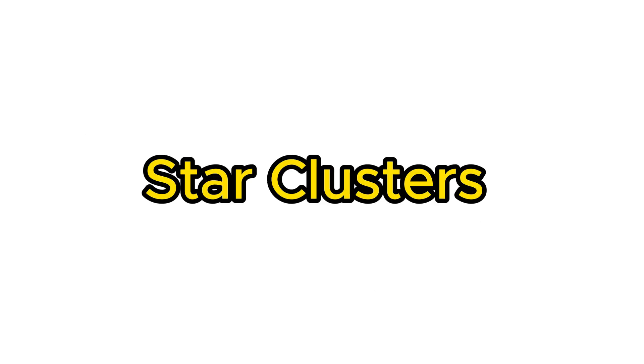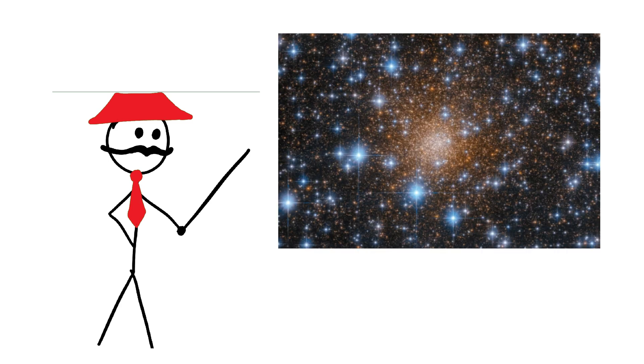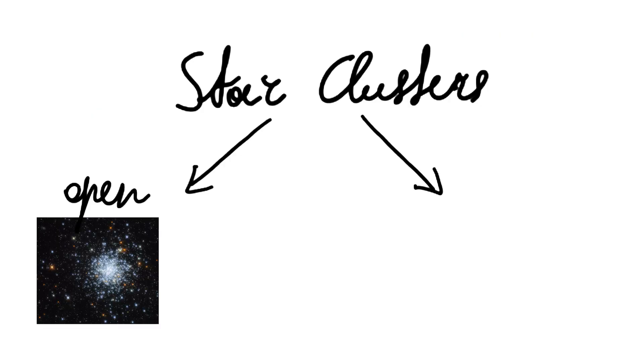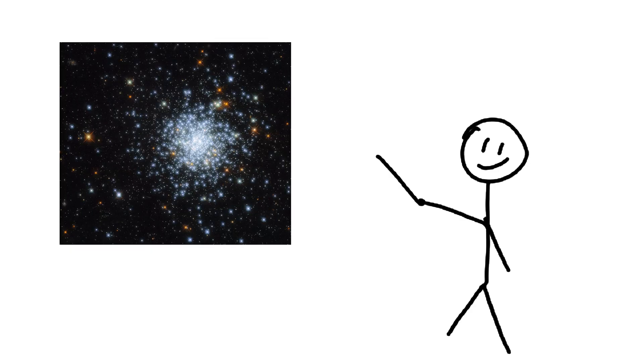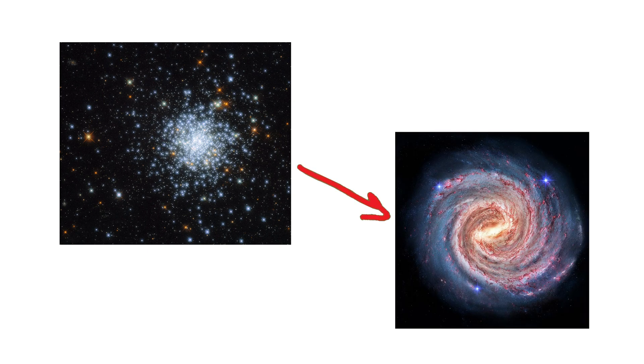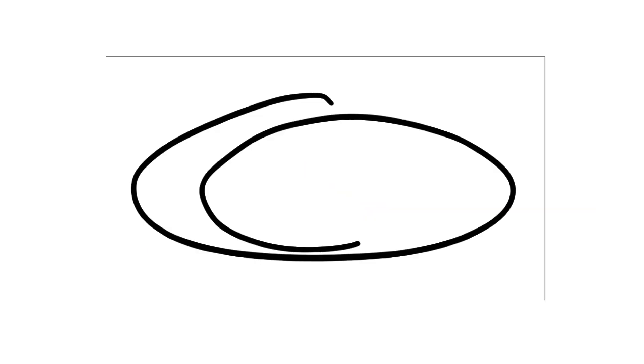Star clusters are groups of stars that are close together in space and are bound together by gravity. There are two main types of star clusters, open clusters and globular clusters. Open clusters are younger and contain up to a few thousand stars. They are often found in the spiral arms of galaxies like our Milky Way. These clusters are loosely held together and their stars are relatively spread out.